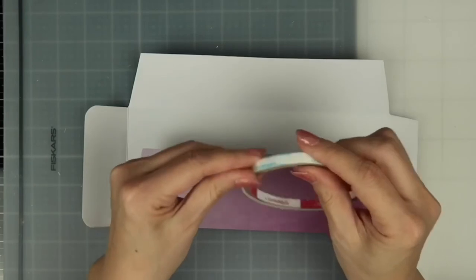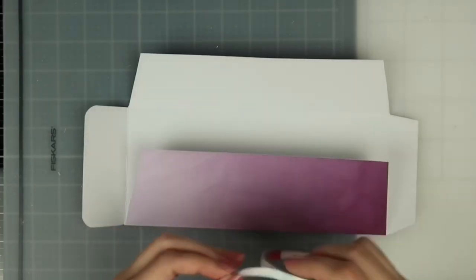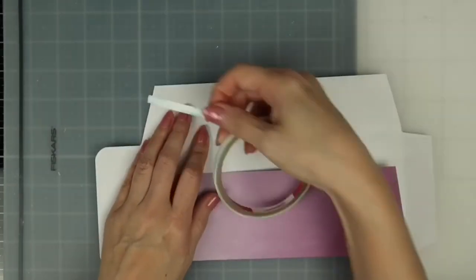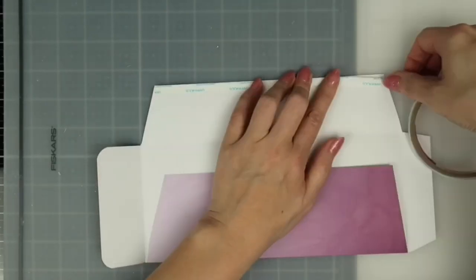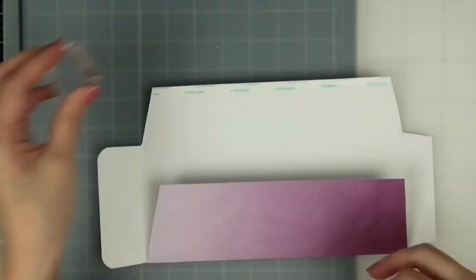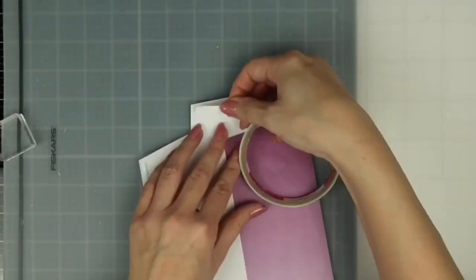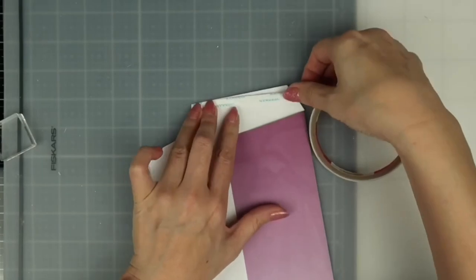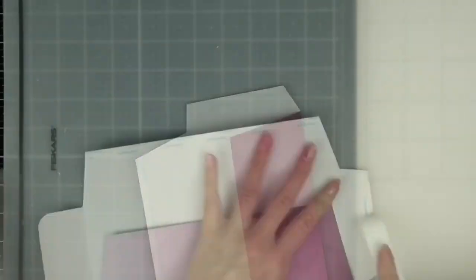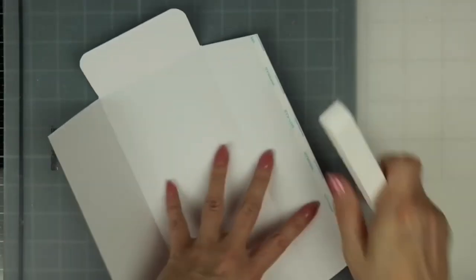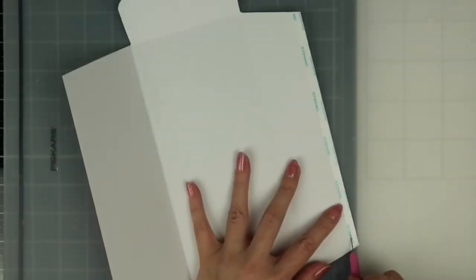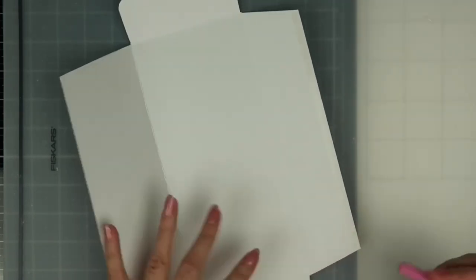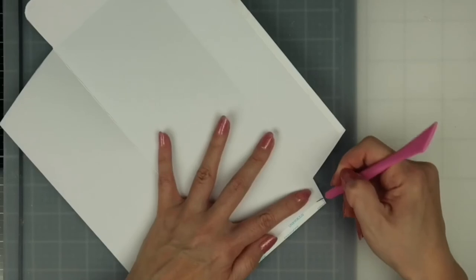To adhere my side flap and my bottom flap closed I'll be using my quarter inch score tape. Feel free to use any type of adhesive that you'd like. I just really like my score tape because it has a very strong hold. Using my Teflon bone folder I'm going to burnish that tape down really well. I'll then remove the release paper and adhere the two side flaps together first and then fold up the bottom flap.